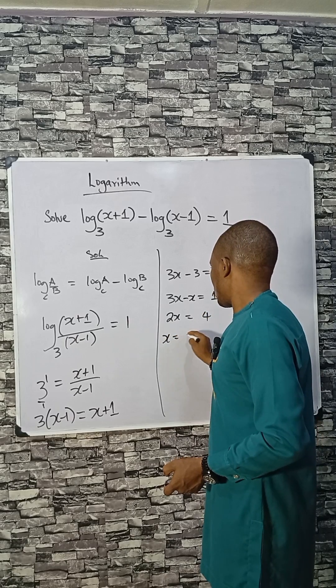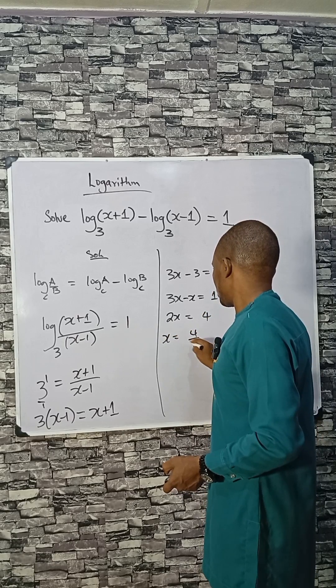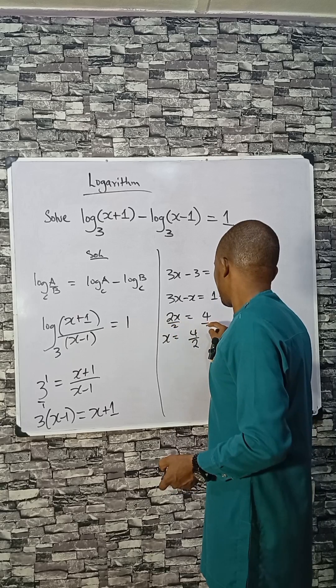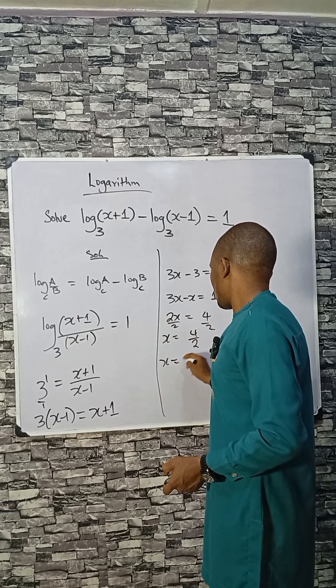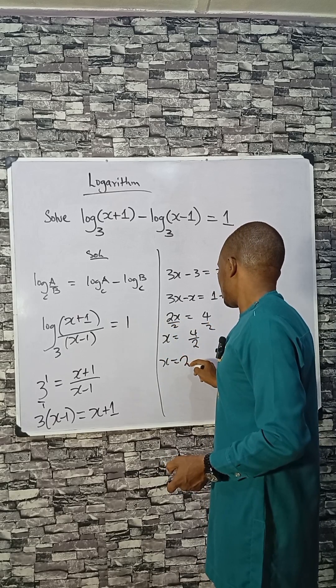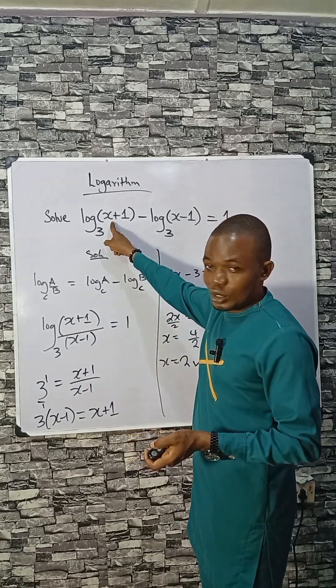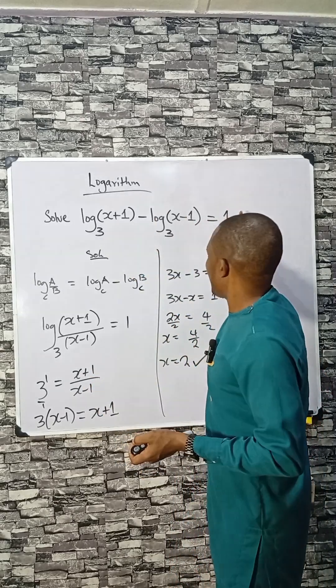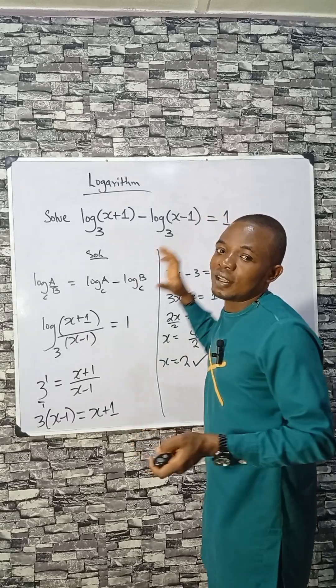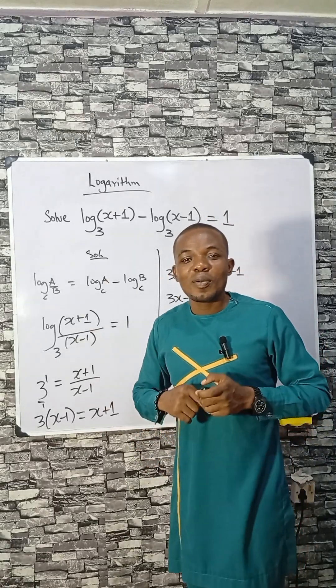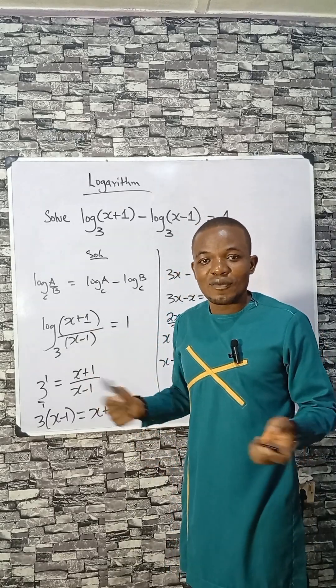So x equals 4 divided by 2, which is 2. I want you to replace x with 2 here and see if you have 1 as the answer. Let me see them in the comment section. Share the video, follow or subscribe for more. Bye-bye.